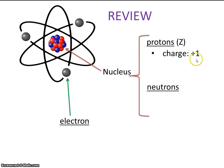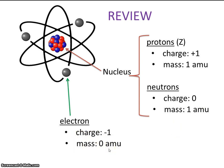Remember, the protons have a positive charge and they have a mass of 1. The neutrons have no charge and they have a mass of 1. The electrons have a charge of minus 1 and they have no mass. Keep this in mind as we watch the next several videos.